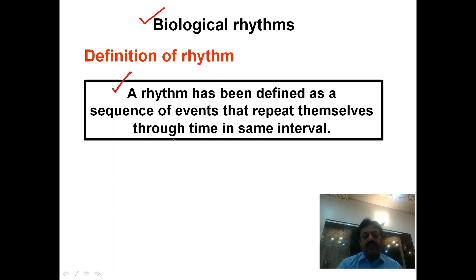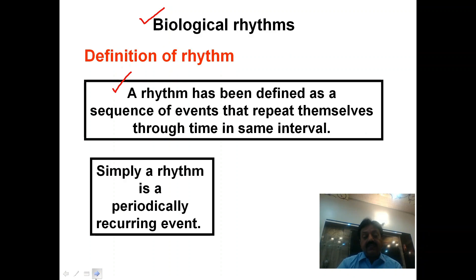A rhythm has been defined as a sequence of events that repeat themselves through time in the same interval. Simply, a rhythm is a cycle that repeats in a specific time period.